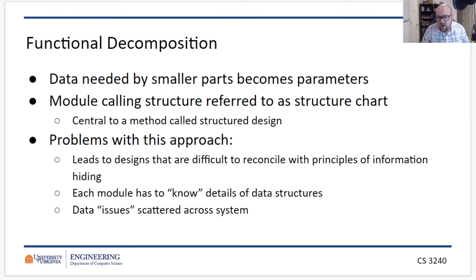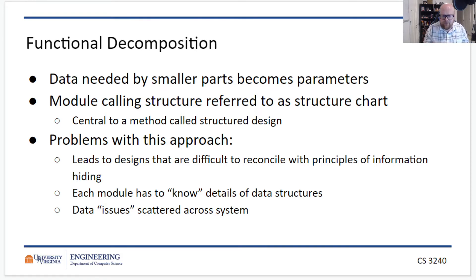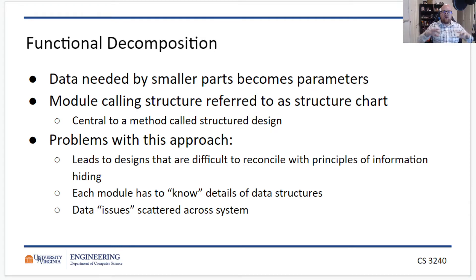There are problems with this approach. It doesn't really work well with information hiding. When you're passing data structures from main to the functions, those functions may have to perform side effects — manipulating those data structures — so at that point we're talking about coupling. The data issues are scattered across the system; the parts that need to deal with data are throughout the system rather than being contained in a data layer, as in a layered three-tier architecture.